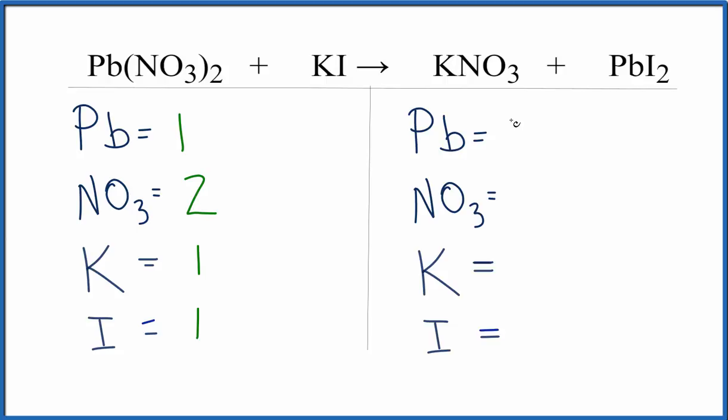Over on the products, we'll go the same order. Lead, I have one, I have one nitrate, I have one potassium, and I have two iodine atoms.